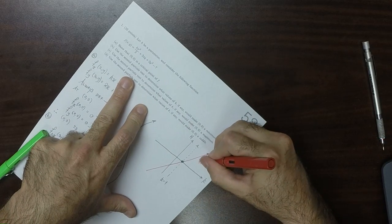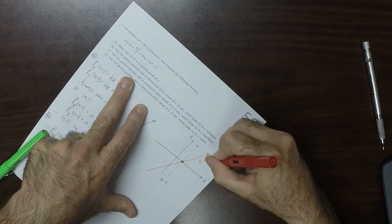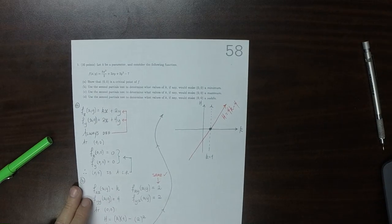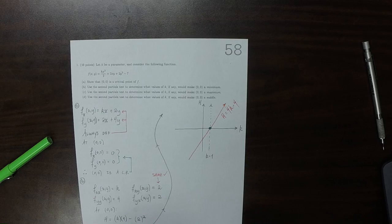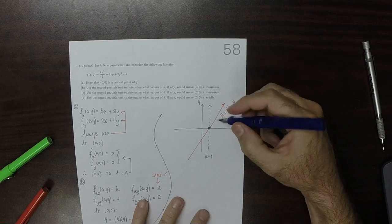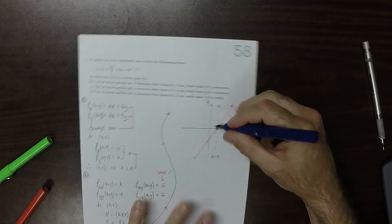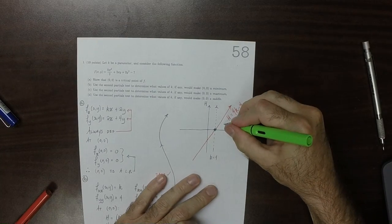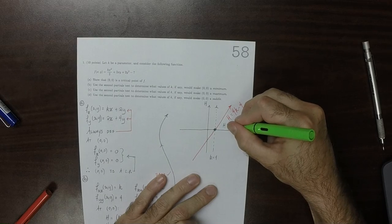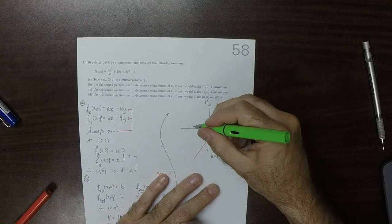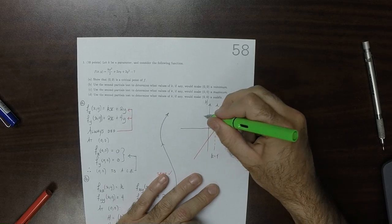And h is 4k minus 4 looks like this. To the right of k is 1, this is where the h-value is positive. And to the left, this is where the h-value is negative.